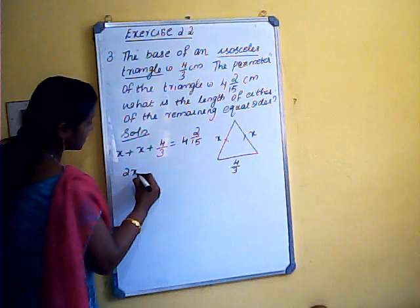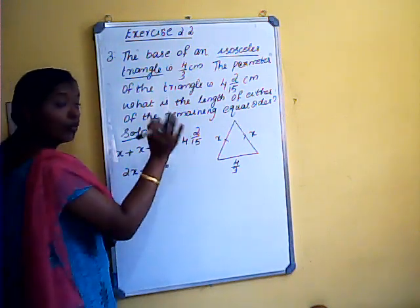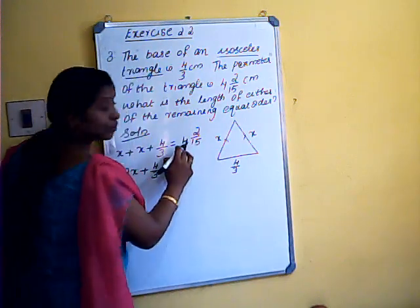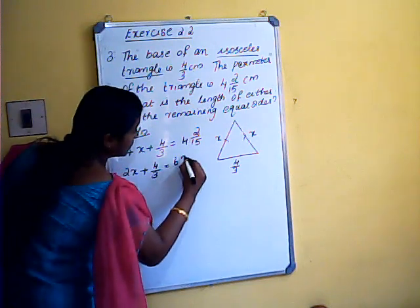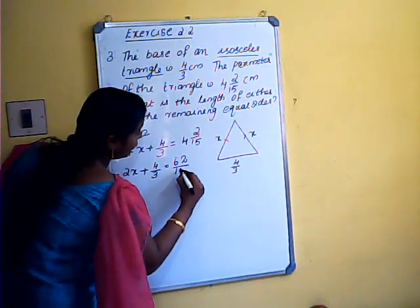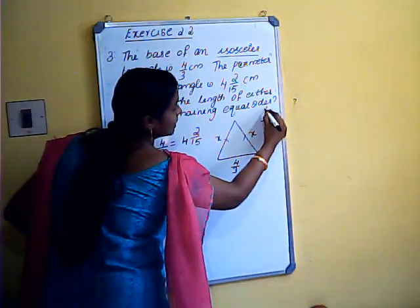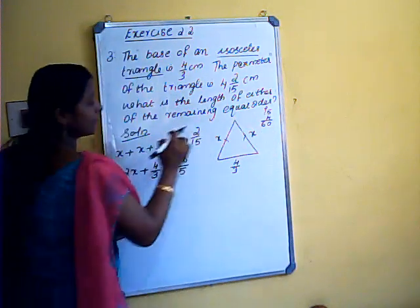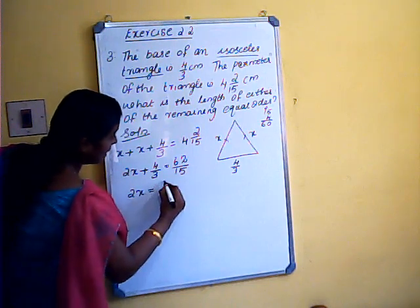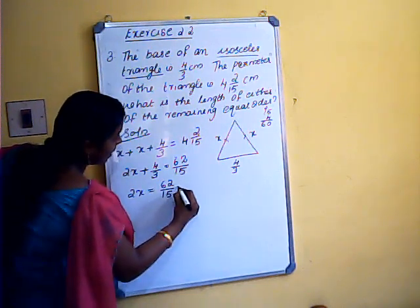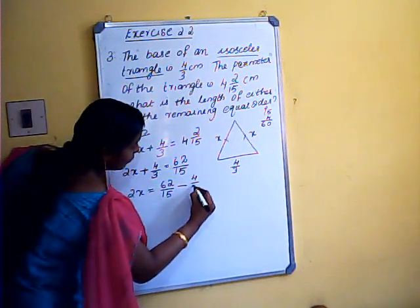So 2x plus 4/3 equals 4 and 2/15. Converting the mixed fraction to an improper fraction: 15 times 4 is 60, plus 2 is 62, giving 62/15. So 2x equals 62/15 minus 4/3.